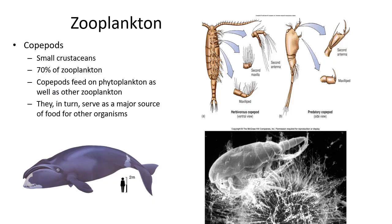Zooplankton can be larger organisms too. Sometimes there are small crustaceans referred to as copepods, which make up about 70% of zooplankton. Interestingly, there are enough copepods in the ocean to support some of the largest organisms in the world — whales. The blue whale, the largest animal in the world, feeds on lots of different things, but a big proportion of its diet is krill, which are mostly copepods.